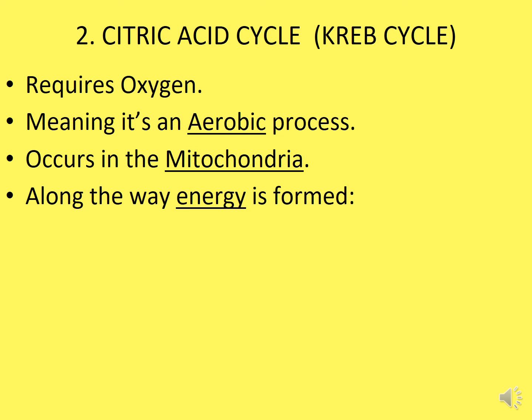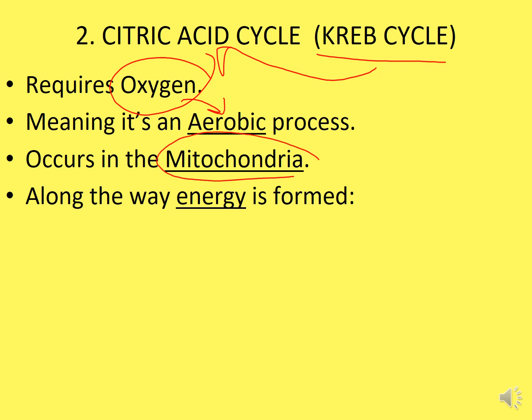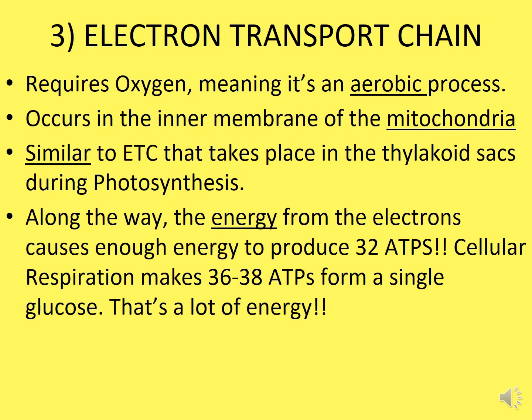The second stage is the Krebs cycle, also known as the citric acid cycle. This one requires oxygen, meaning it is aerobic. Unlike glycolysis, which occurs in the cytoplasm, the Krebs cycle occurs in the mitochondria. Along the way, this is where the energy is being formed.